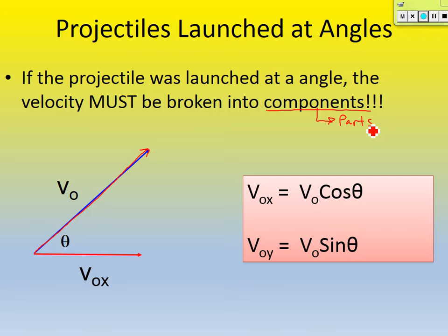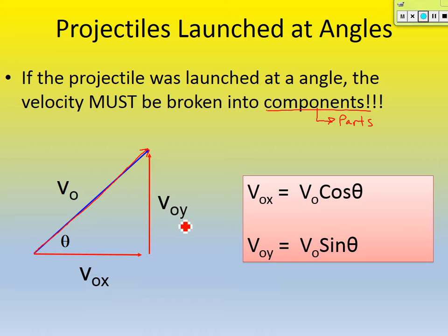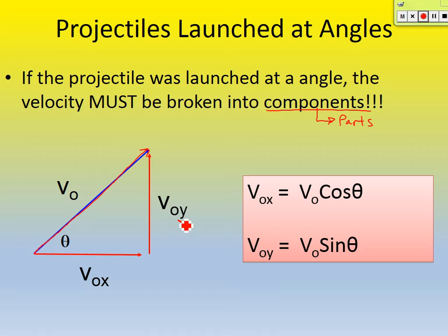If the projectile is going at some angle theta, you need to figure out what its initial velocity was in the x direction — horizontal — and we'll need to calculate its initial velocity in the y direction, or the vertical direction. I call this one VOx, initial velocity in the x direction, because it's along the x-axis. It's horizontal. I call this one VOy, because it's the initial velocity in the y direction.